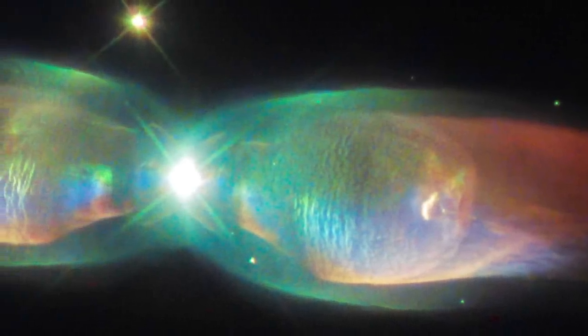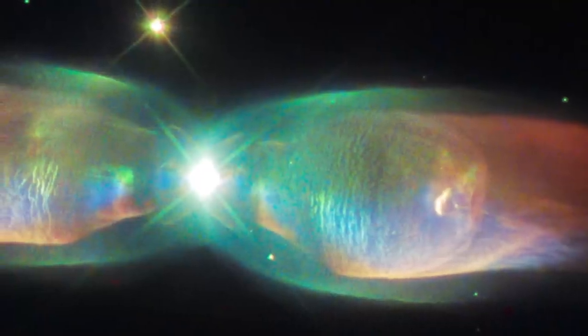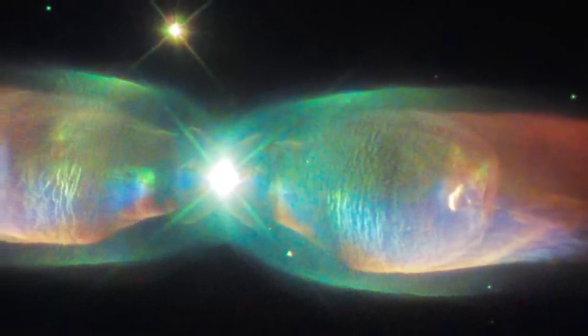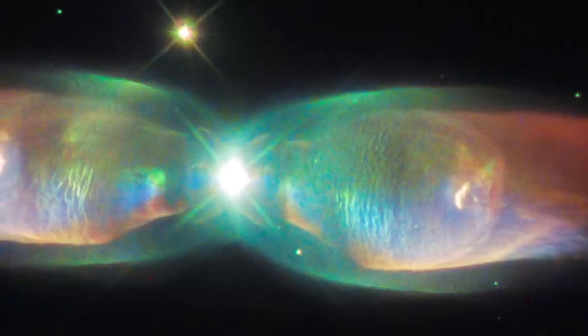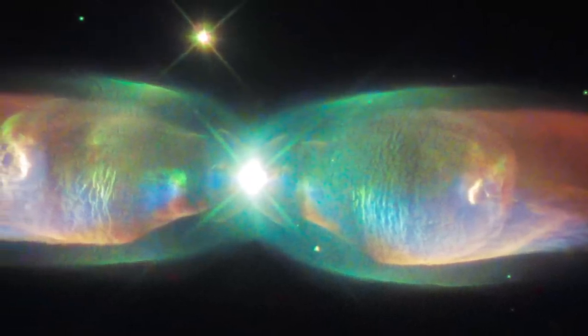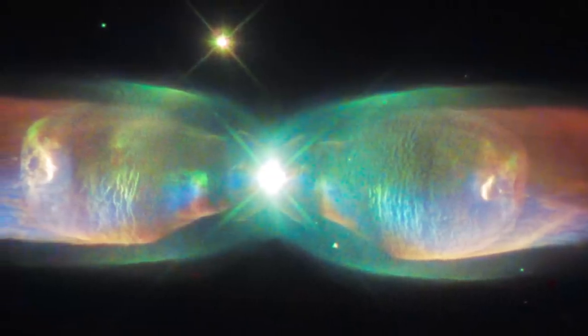Shimmering colours in this new image show off the remarkable complexity of the planetary nebula PNM2-9, better known as the Twin Jet Nebula. The new view from Hubble highlights the nebula's shells and knots of expanding gas in striking detail.